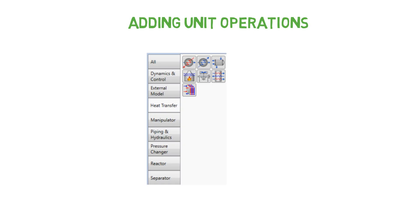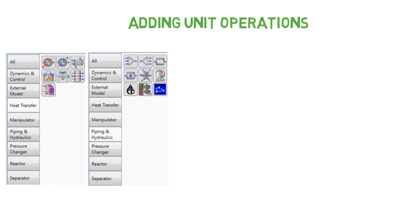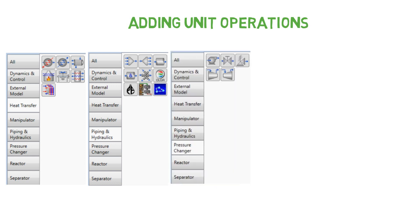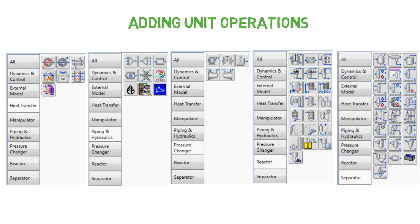We're also going to see how to add unit operations to the flow sheet. We'll see first heat transfer units such as a heater, cooler, or chiller. We continue with piping and hydraulics, then pressure changers such as pumps and compressors. We continue with reactors — conversion reactor, equilibrium reactor, or Gibbs free energy reactor. And finally, separators, which are separation units: either a flash, distillation column, absorber, reboilers, and so on.